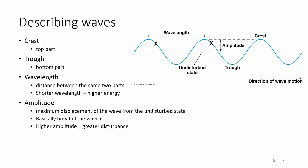Amplitude is the maximum displacement of the wave from the undisturbed state. That's why you measure from the middle — it's the undisturbed state. Higher the amplitude, greater the disturbance.